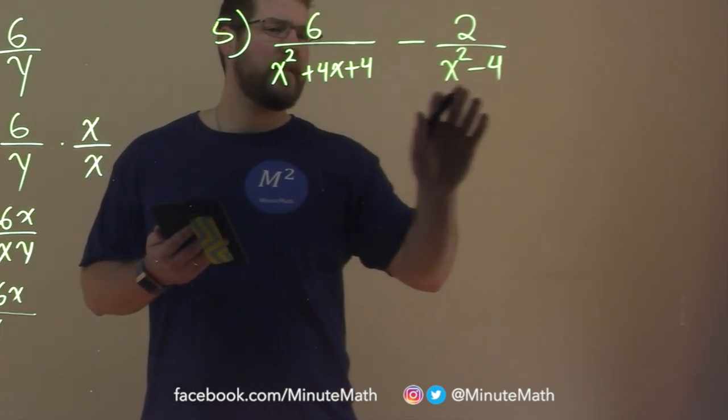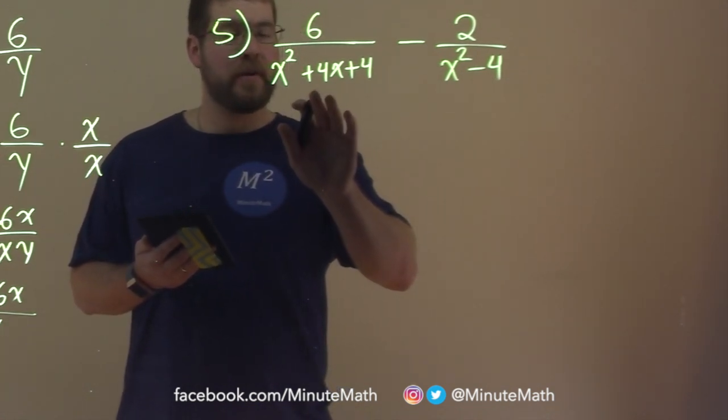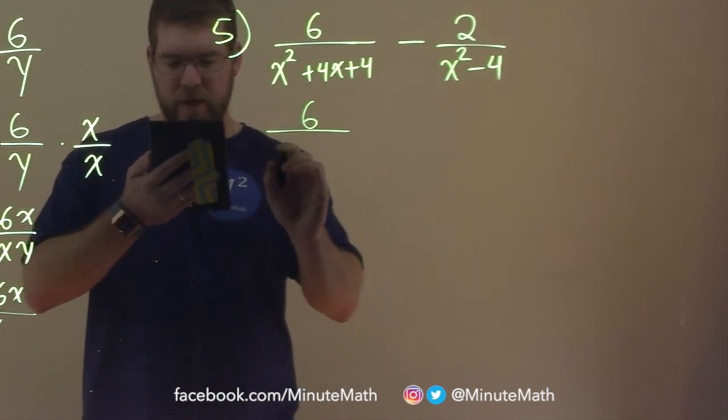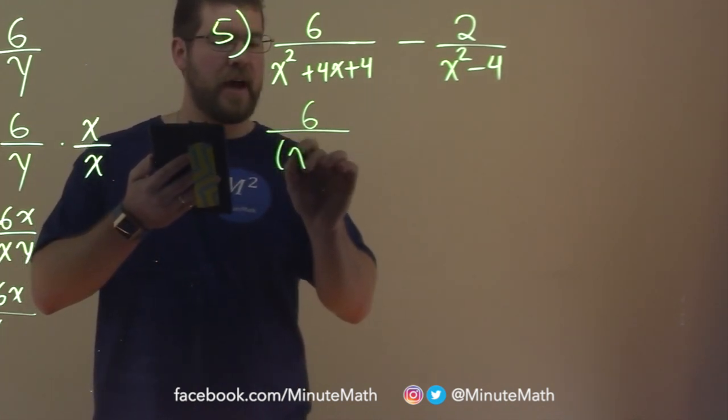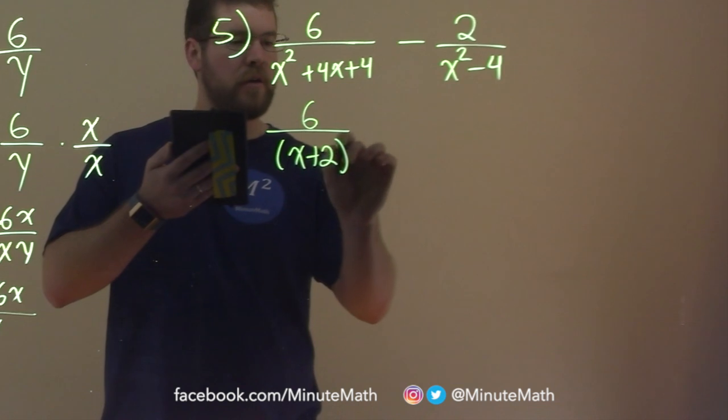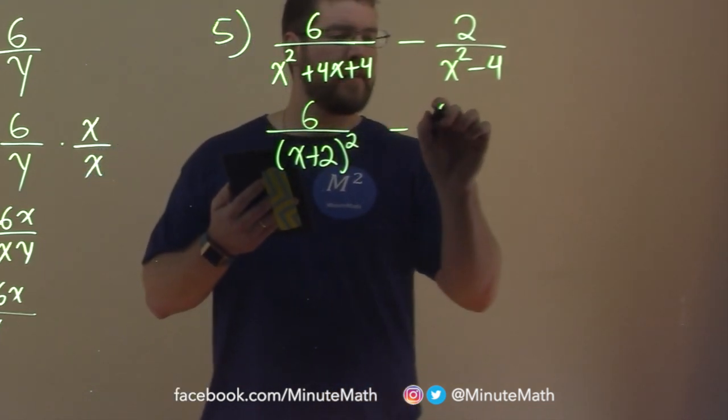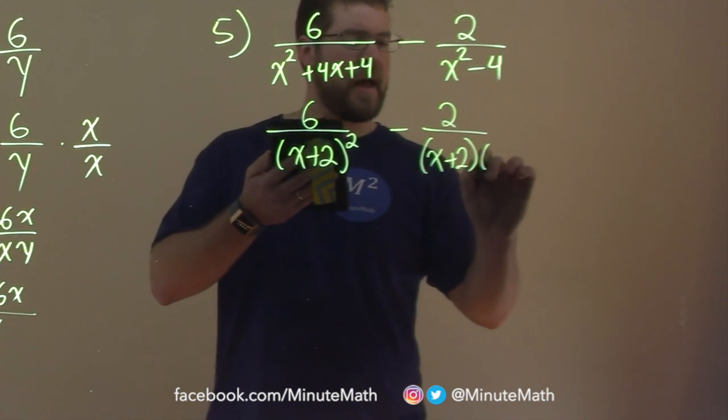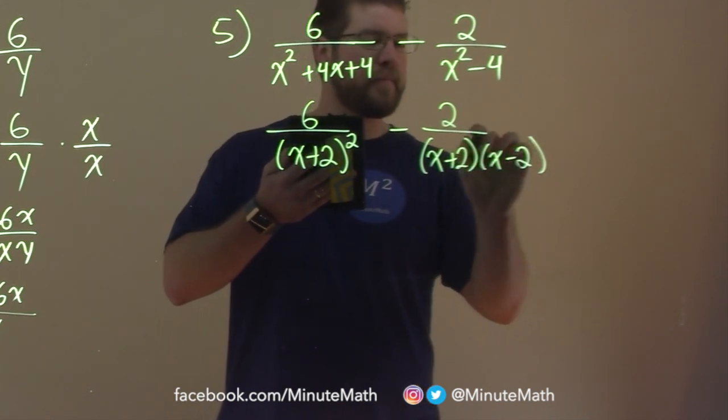Well, when I see stuff like this, I always think it's great to factor as soon as possible. So we have 6 over, the denominator can factor to be, well, it's actually x plus 2 all squared. And on this side here, it's going to be an x plus 2 and an x minus 2.